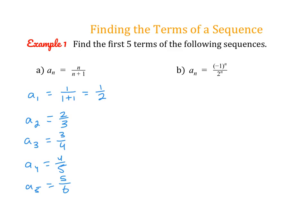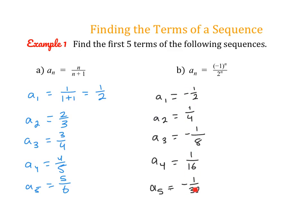Pause the video and see if you can find the first five terms of a_sub_n equals negative 1 to the power of n, over 2 to the power of n. One thing to note: if you want to create a sequence that alternates between negative and positive, you use negative 1 to the power of n. You could also use negative 1 to the power of n plus 1 or n minus 1 to flip the order. For exponential growth — doubling each time — use base 2 to the power of n; to triple, use base 3 to the power of n.